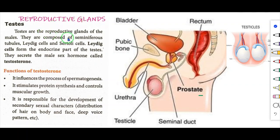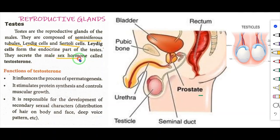Testes are the reproductive glands of males. They are composed of seminiferous tubules, Leydig cells and Sertoli cells. The Leydig cells form the endocrine part of the testes. The testes secrete the male sex hormone known as testosterone.